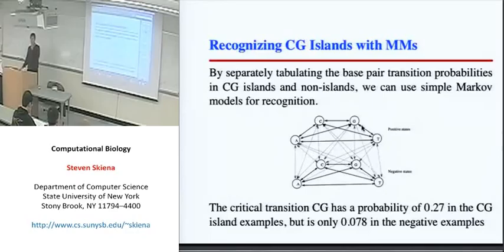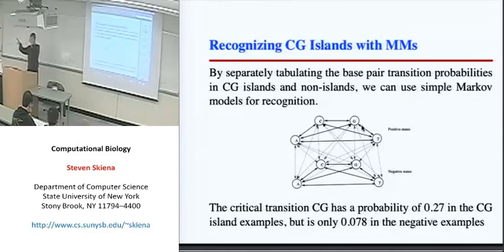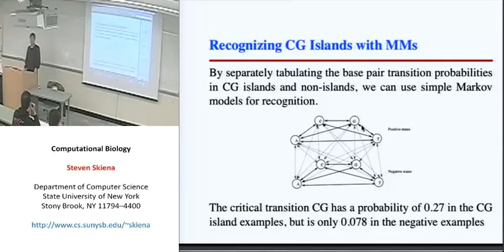We've discussed a couple of ways you might annotate a string given a model with transition probabilities — for example, finding the highest probability path. That was the Viterbi algorithm: find the highest probability path through the automata, and depending upon which states you visit, label which parts of the string are positive and which are negative. We also discussed computing the probability over all paths that the string is in a particular state at a particular time, which gives another way of annotating.